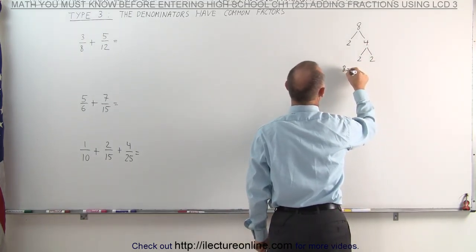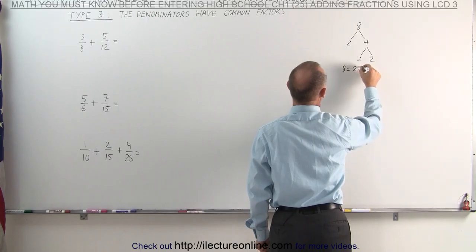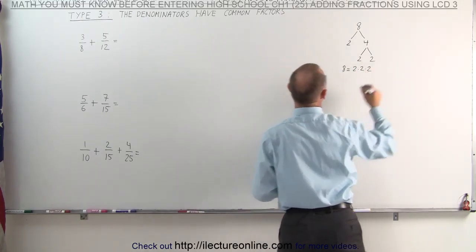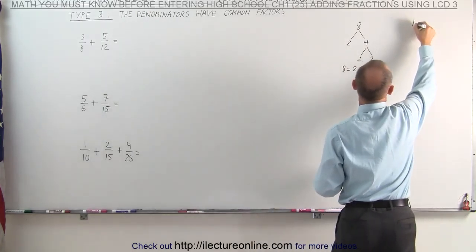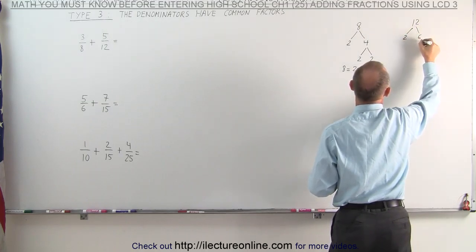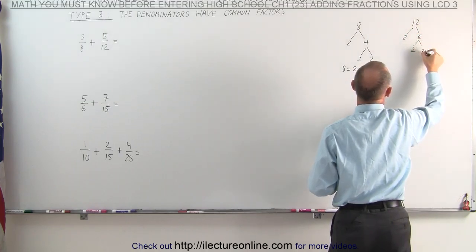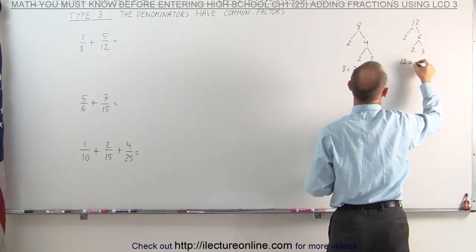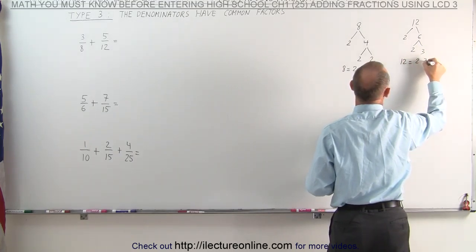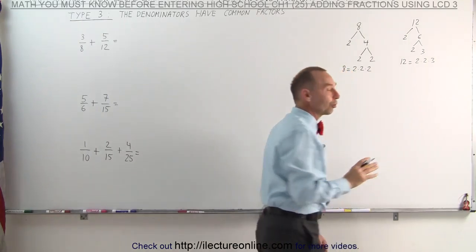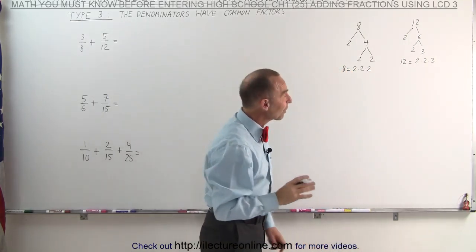One way we can do that is use what we call the tree method, where we draw two lines like this. 8 can be divided by 2; 2 goes into 8 four times, and we draw two lines again. 4 can be divided by 2 and what we get is 2.